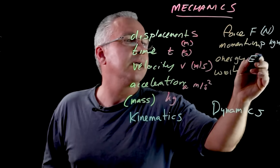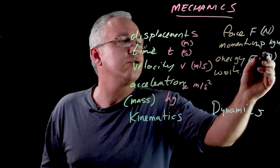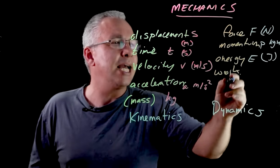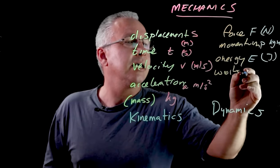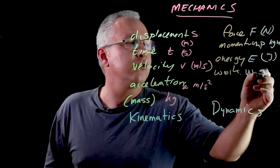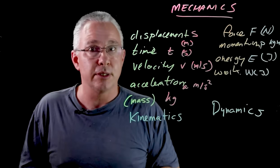Our energy has a symbol e and its unit is the joule and work is related to energy and actually has a symbol w but it's also the joule. The two are very much the same.